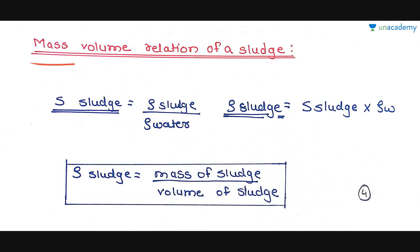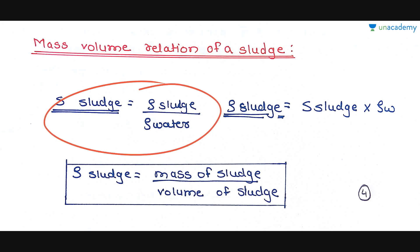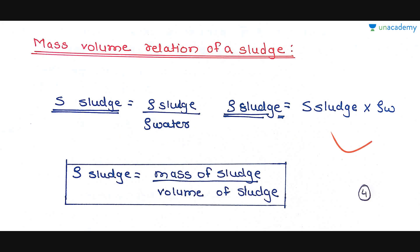Next we look at the mass-volume relation of sludge. The specific gravity of sludge is defined as: S_sludge = ρ_sludge / ρ_water. Therefore, density of sludge = specific gravity of sludge × density of water. Also, ρ_sludge = mass of sludge / volume of sludge. These formulas are important and will be needed when solving problems.